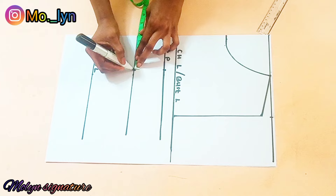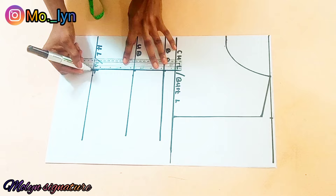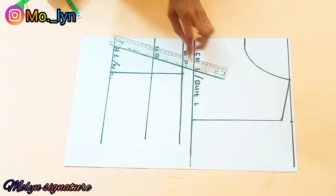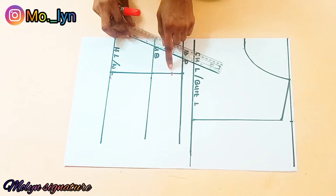Now I'll go ahead and connect the straight line from there downwards. I'll be inserting my dart intake of about 0.5 inches on both sides and connect it to the top where I'll be marking one inch downwards from the bust point, then draw a line to connect it downwards.